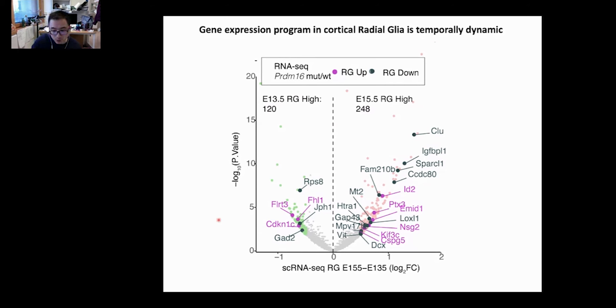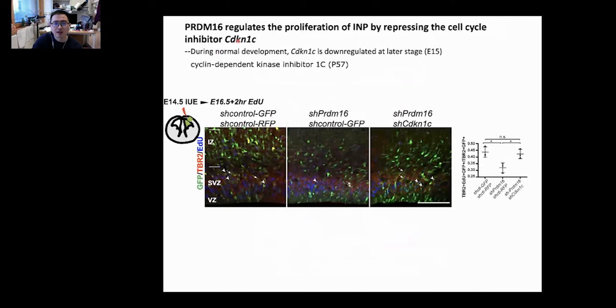We focused on two genes with this pattern: CDKN1C and FLRT3. To validate the first target, CDKN1C, which is a well-studied cell cycle inhibitor, we did the same experiment. With control vectors, you see that normally the proliferation of INPs is around this level, but when you knock down PRDM16, this level drops. When you further knock down CDKN1C, you rescue this phenotype. This clearly provides evidence that PRDM16 regulates the proliferation of upper layer neurons by repressing this cell cycle inhibitor.